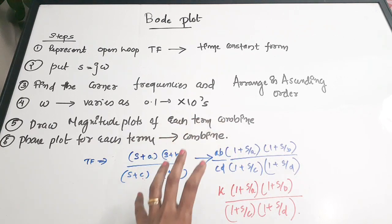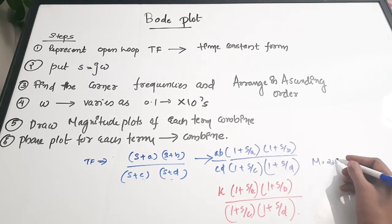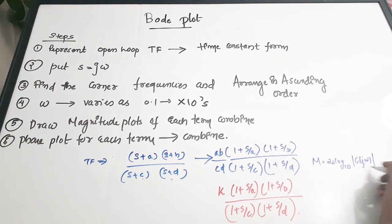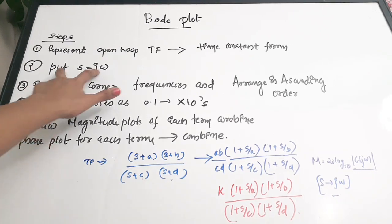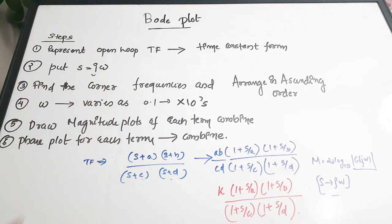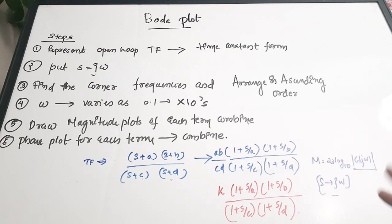The second step is to put s = jω. As explained earlier, the magnitude equation is M = 20 log₁₀ |G(jω)|, so we substitute s = jω throughout the transfer function. The third step is to find the corner frequencies and arrange them in ascending order. You take all the corner frequencies from the various terms and arrange them from smallest to largest.